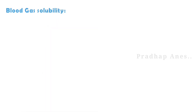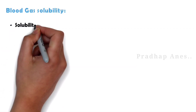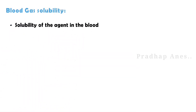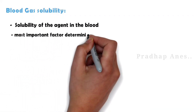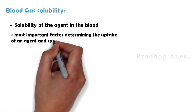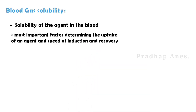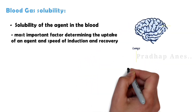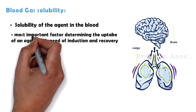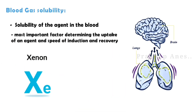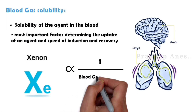Blood gas solubility coefficient is the solubility of the agent in the blood. This is the most important factor determining the uptake of an agent and the speed of induction and recovery. For example, xenon has a MAC value of 70, meaning there is more gas in the lungs and its solubility in blood is less, so it rapidly goes to the brain and comes back soon. Therefore, MAC value is inversely proportional to the blood gas coefficient.